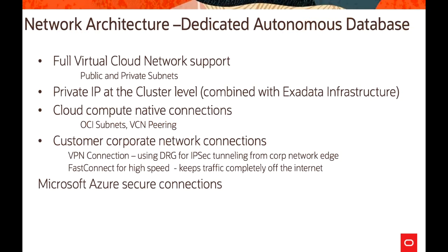When it comes to network architecture for dedicated Autonomous Database, we have full Virtual Cloud Network support. Any customer can deploy in public as well as private subnets, with private IPs at the cluster level combined with Exadata infrastructure. Cloud-native connections use OCI subnets or VCN peering, and customer corporate network connections can be made over VPN or using DRG for IP-sector tunneling.